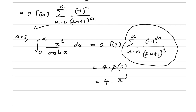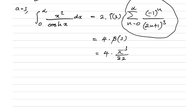We know that beta(3) = π³/32, so the final answer simplifies to π³/8. If you like this type of video, please subscribe to the channel. Thank you for watching.